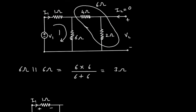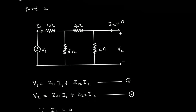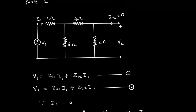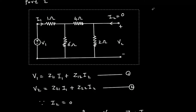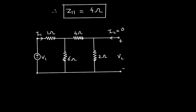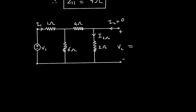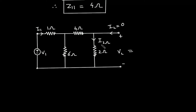Now we will find the value of V2. The voltage V2 is the voltage across the 2 ohm resistor. We need to use the current division rule to find the current through the 2 ohm, which we call I_2ohm. Suppose the current through the 2 ohm is I_2ohm.